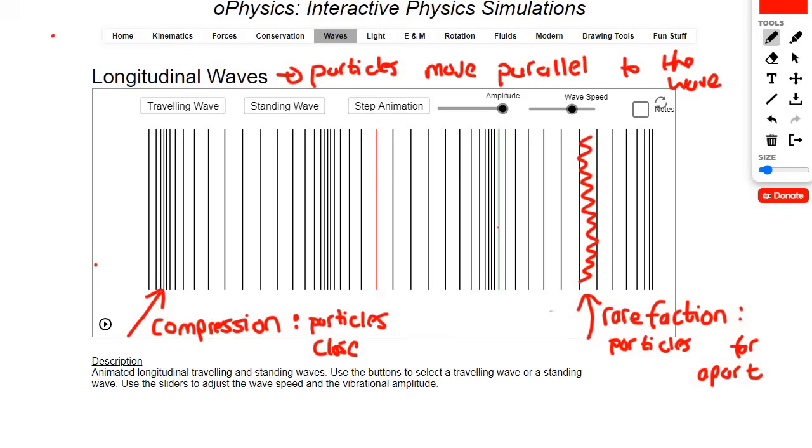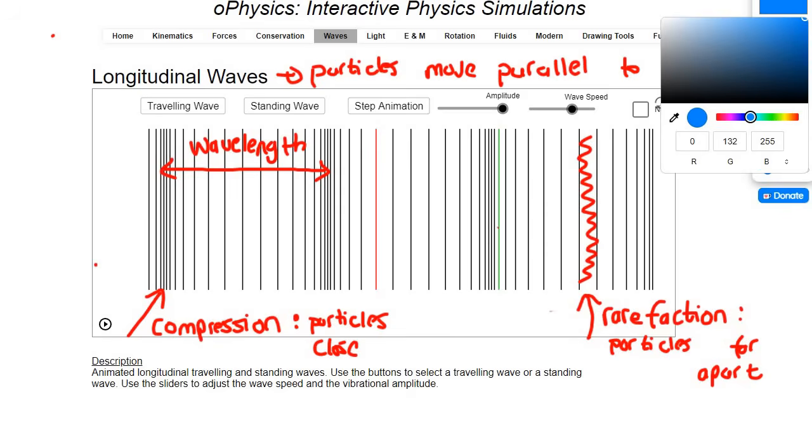Okay, now if you go connect any compression to another compression, so for example, that to that, that is going to be a wavelength. Okay, that would be one wavelength. You could also go and connect a part where it's really spread out, so for example, there all the way to another part that's spread out. And that would also be a wavelength, and it would be the same wavelength whether you looked at this one or whether you looked at that one.